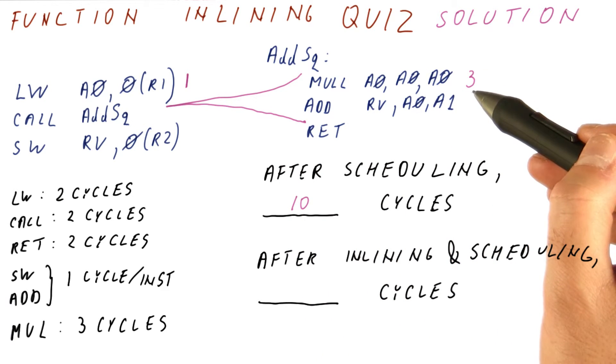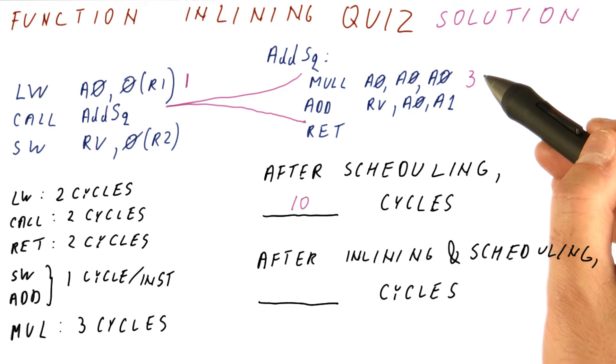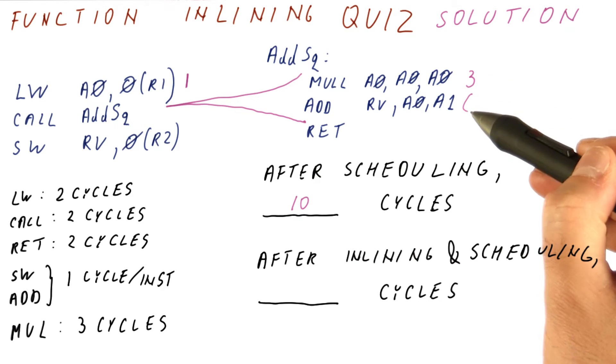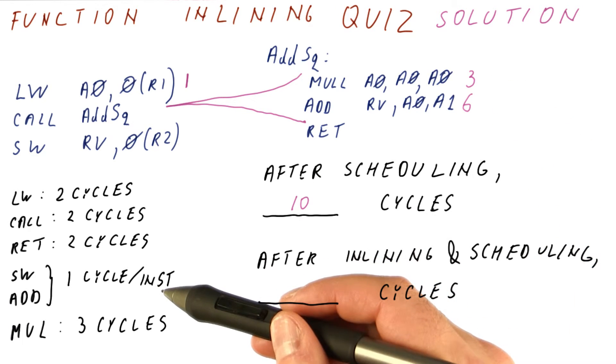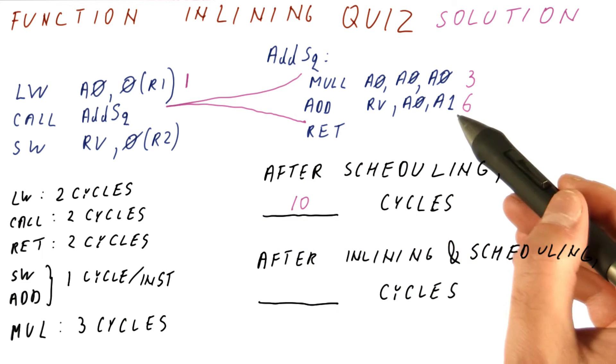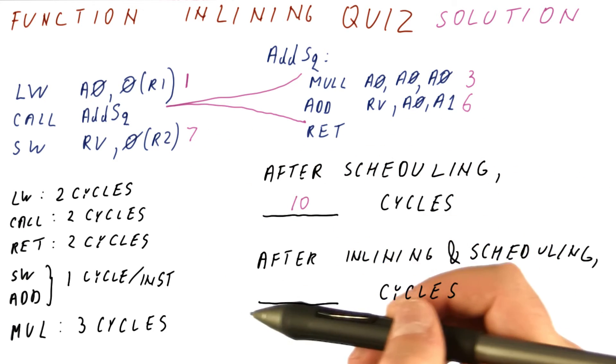Next, we have the multiplication happening in cycles three, four, and five. So we can only do this in cycle six. The add only takes one cycle, and the store can then happen in cycle seven, and that's when it finishes.